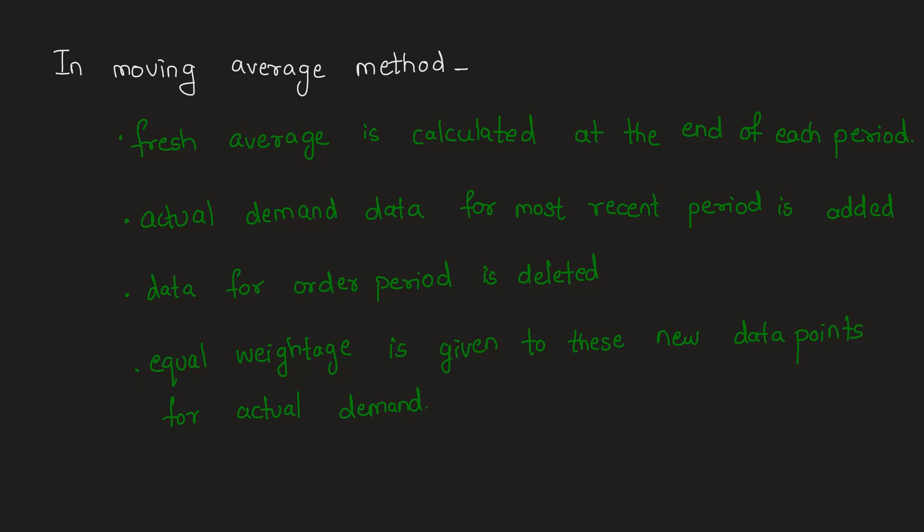In all the other methods, more weightage is given depending on whether they follow a particular trend or whether they are the most recent observations. So weightage given to every data point can differ based upon their recency. Therefore, we say the moving average method is the method in which equal weightage is given to the M most recent observations.